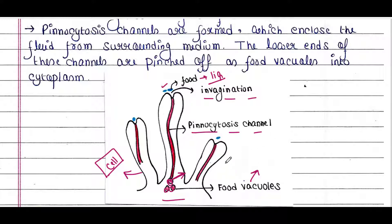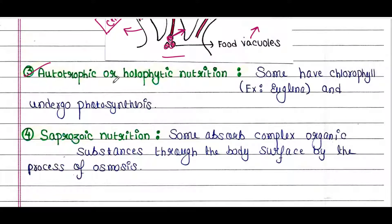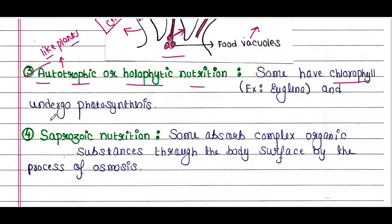Next process is autotrophic or holophytic nutrition. Autotrophic means just like plants — they can make their own food. There are some protozoa that have chlorophyll, just like plants, and they undergo photosynthesis to make their own food. Such a protozoa is Euglena.